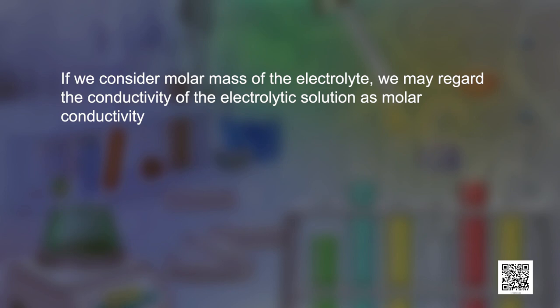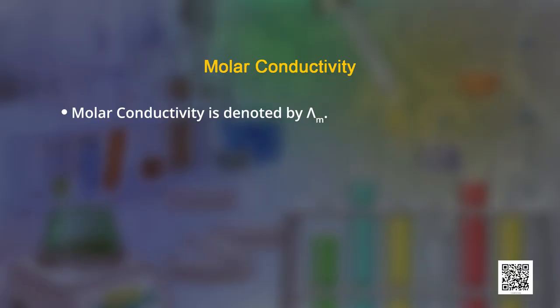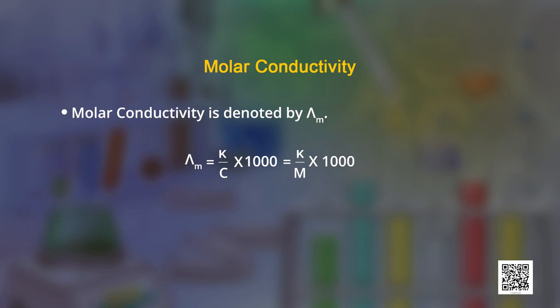If we consider the molar mass of the electrolyte, we may regard the conductivity of the electrolytic solution as molar conductivity. It is the conductance of all the ions produced by 1 gram mole of the electrolyte in solution and is denoted by λm. λm = κ / (C × 1000), where κ is the conductivity and C is the concentration. It can also be written as κ / (M × 1000), where M is the molarity. The units are ohm⁻¹ cm² mol⁻¹. Both conductivity and molar conductivity change with concentration of the electrolyte.